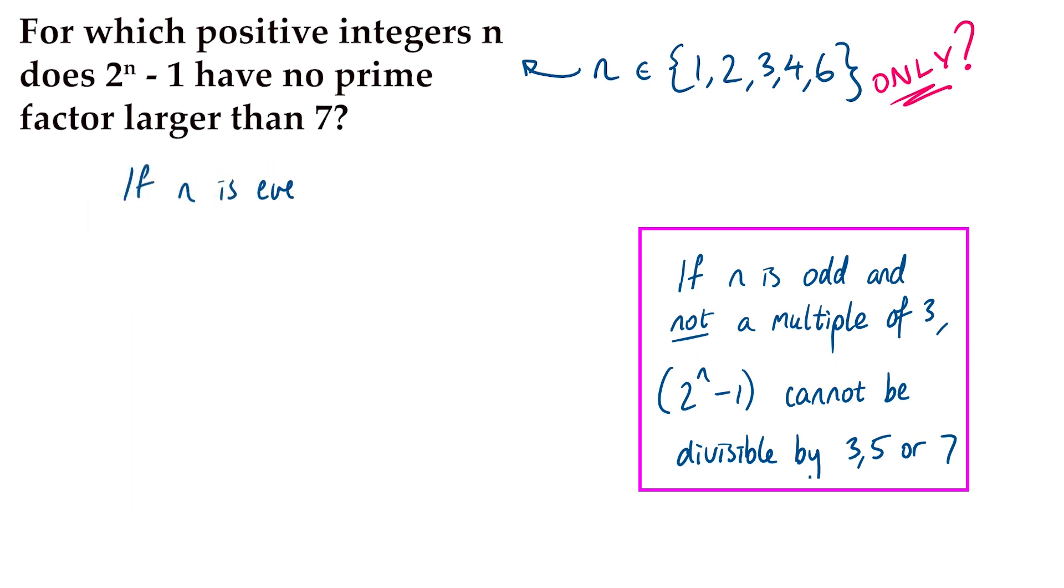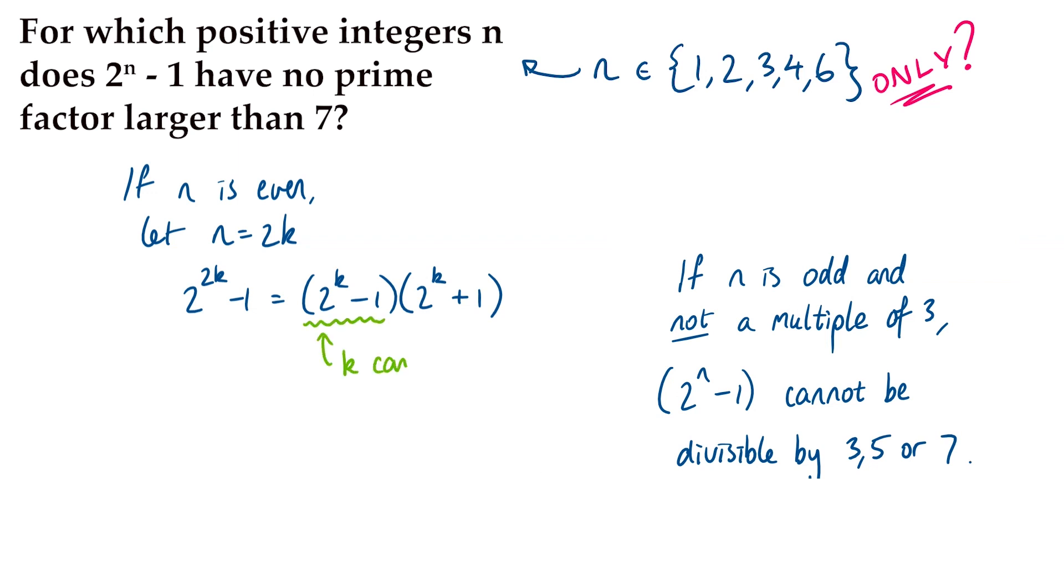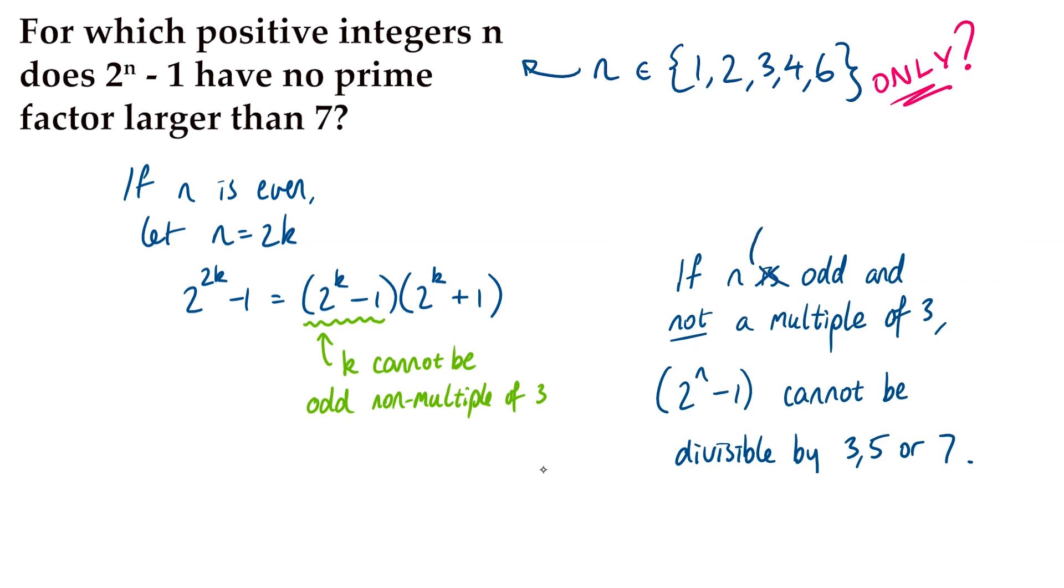If n were even, say if n were 2k, then we could use a difference of squares factorization. So, we could factorize this into bracket 2 to the k minus 1, bracket 2 to the k plus 1. Now, that first bracket, 2 to the k minus 1, looks a lot like what we started with. So, if k were an odd number, not a multiple of 3, like 5, 7, 11, 13, etc., then 2 to the n minus 1 would have a prime factor larger than 7.